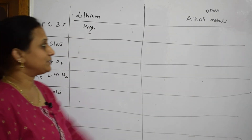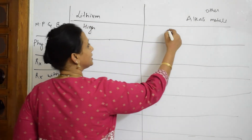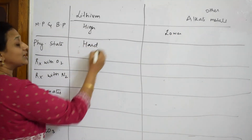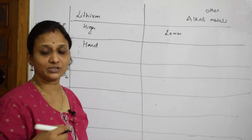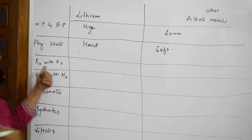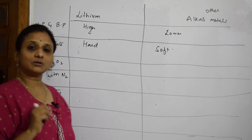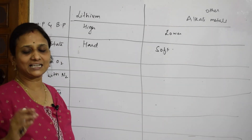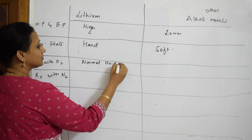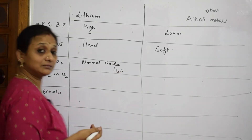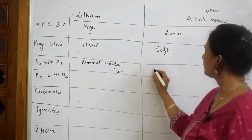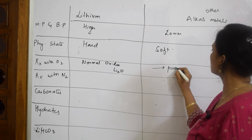Regarding physical state: lithium is very hard in nature, while other alkali metals are soft enough to be cut with a knife. Regarding reaction with oxygen: lithium reacts with oxygen to form only normal oxide Li₂O, whereas other alkali metals react with oxygen to form not just normal oxides but also peroxides and superoxides.